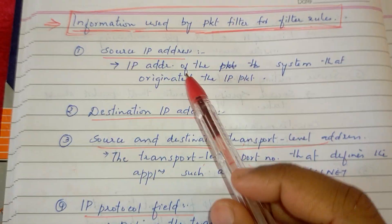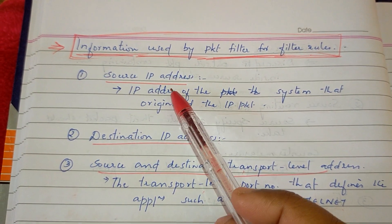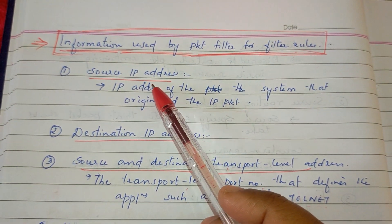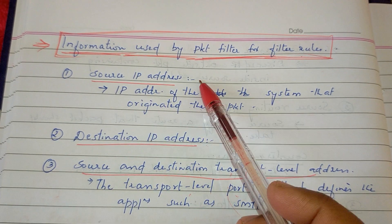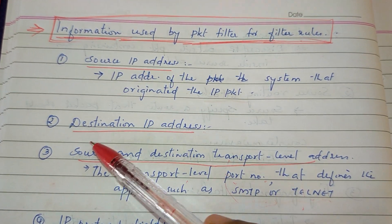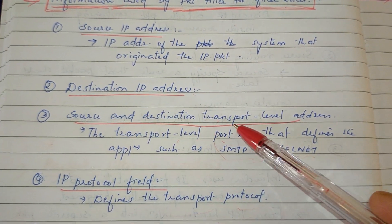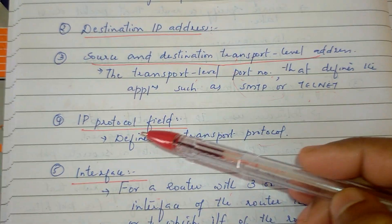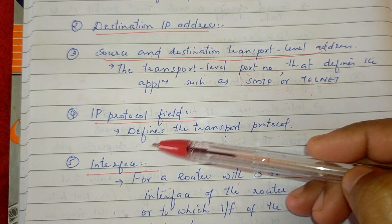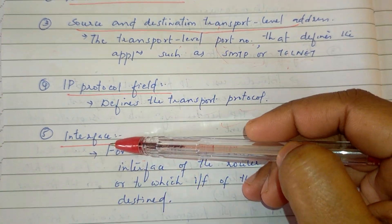So this information is used for filtering rules: source IP address, destination IP address, source and destination transport level address, IP protocol field, and interface.